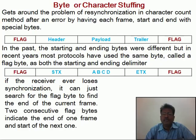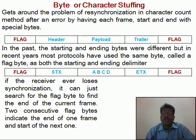The 2nd method is byte or character stuffing. This method helps to get around the problem of synchronization in the character count method. It uses special bytes at the start and end. The frame format for this method has 5 fields: flag, header, payload, trailer, and flag. In the past, the starting and ending bytes were different, but in recent years most protocols have used the same byte at the start and end. These bytes are called flag bytes and are the delimiters indicating the start and end of the frame.